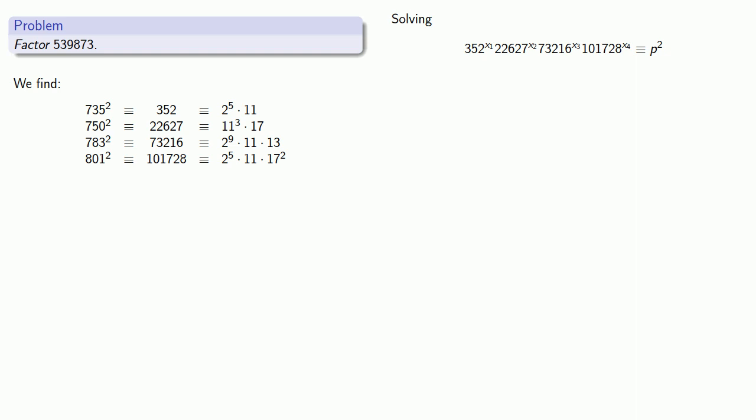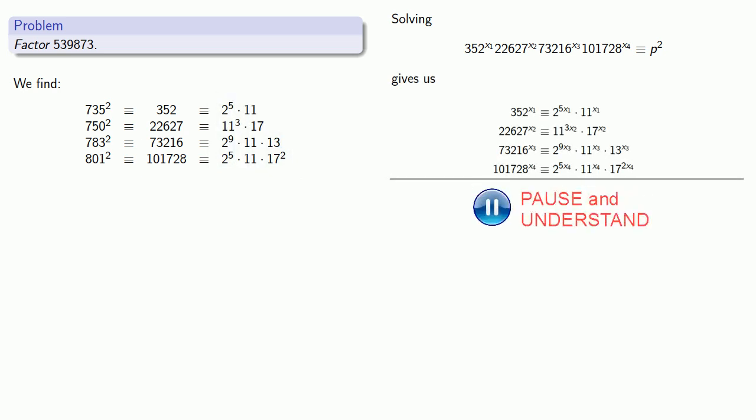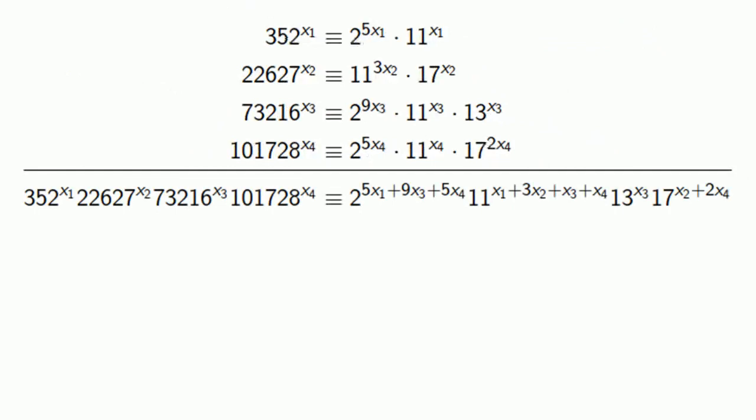Since we know the prime factorization of 352, 22627, and so on, we can write this in prime factored form and multiply them all together.